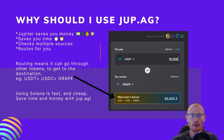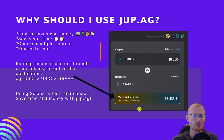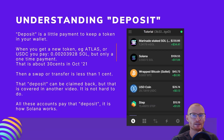Why should I use jup.ag? Jupiter saves you money, saves you time, checks multiple sources, and routes for you. Routing means it can go through other tokens to get to your destination. As an example, this is USDT going into USDC to give you a great rate. Using Solana is fast and cheap, but you may as well be saving even more time and money with Jupiter.